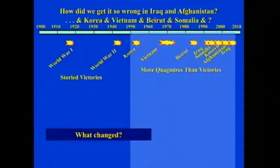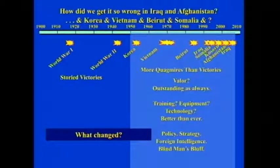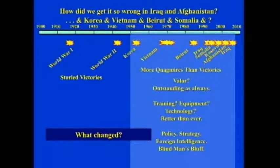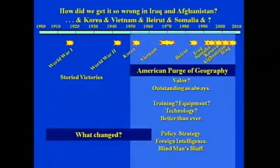We have this century of first-half storied victories, second-half more quagmires than victories. What changed? Was it the valor of our troops? No — they're as outstanding as always. Was it the training, equipment, or technology? No — those are better than ever. Policy, strategy, foreign intelligence — we've been playing a dangerous game of blind man's bluff. And that corresponds with the American purge of geography. America abandoned geography after World War II and hasn't won a war since.